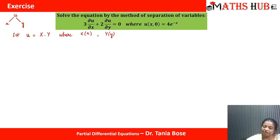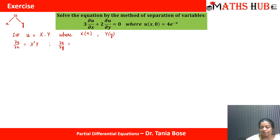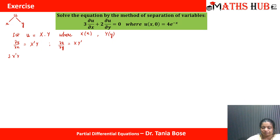The next step is to calculate ∂u/∂x and ∂u/∂y from the given differential equation. ∂u/∂x is the derivative of u with respect to x keeping y constant, which gives X'Y. Similarly, ∂u/∂y is the partial derivative of u with respect to y keeping x constant, giving XY'. Substituting these into the equation gives: 3·X'Y + 2·XY' = 0.